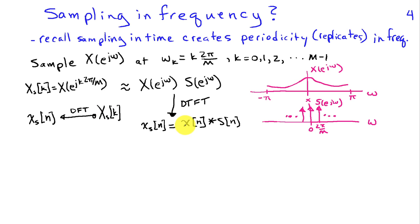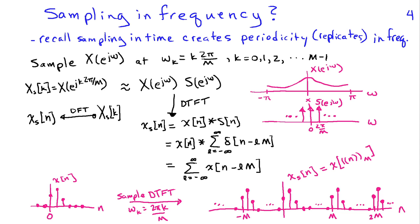And if I go back to the time domain and ask, what is the signal x sub s of n that has DFT x_s of k? Well, it's just the convolution of the original signal x of n with the discrete time Fourier transformer inverse, that is, of s of e to j omega. Now we can compute the inverse discrete time Fourier transform of s of e to j omega easily enough because it's just an impulse train. And it turns out that the inverse discrete time Fourier transform is this infinite sum here of impulses.